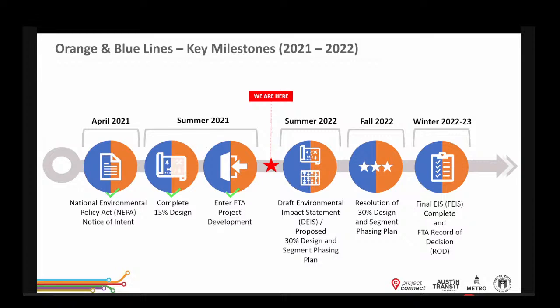Metro Rapid offers 10-minute peak service, similar to what's operating on the 801 and 803. We are working with the city on transit signal priority treatments to help buses move through traffic faster. All Metro Rapid vehicles will be electric — clean, quiet, zero emissions. We've already begun deploying electric vehicles in our fleet and have placed an order so we'll have electric buses ready when Metro Rapid launches.